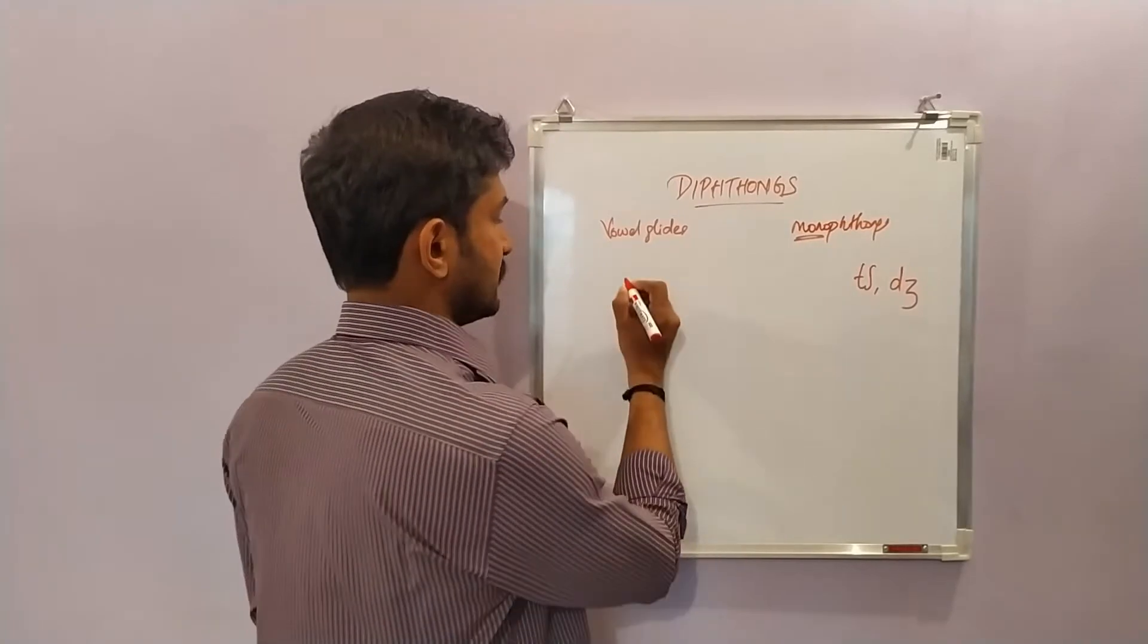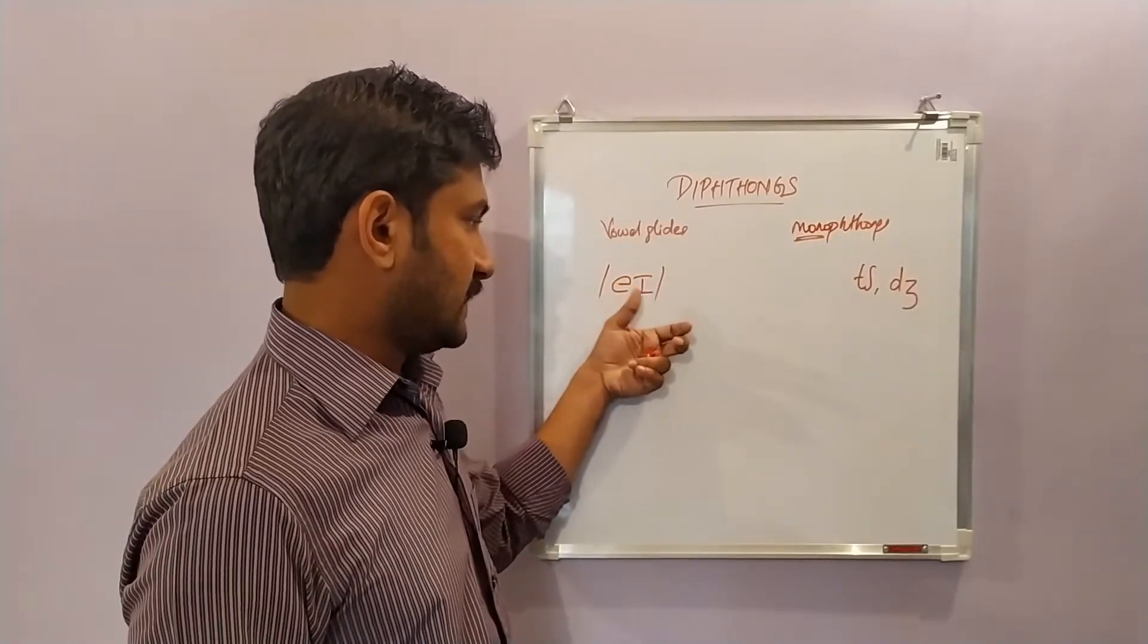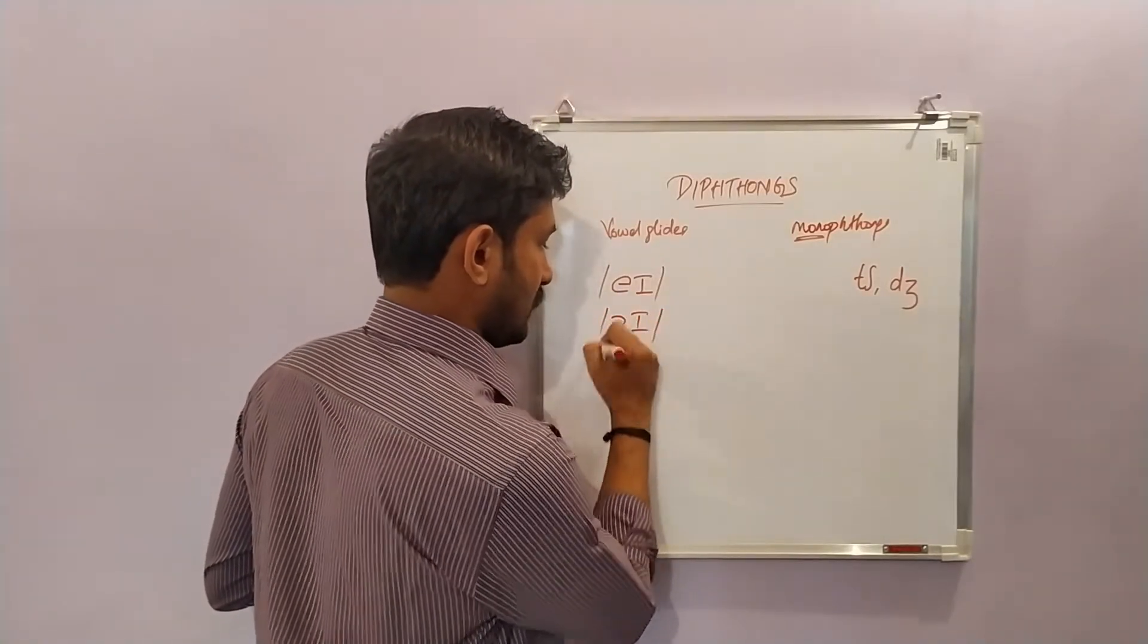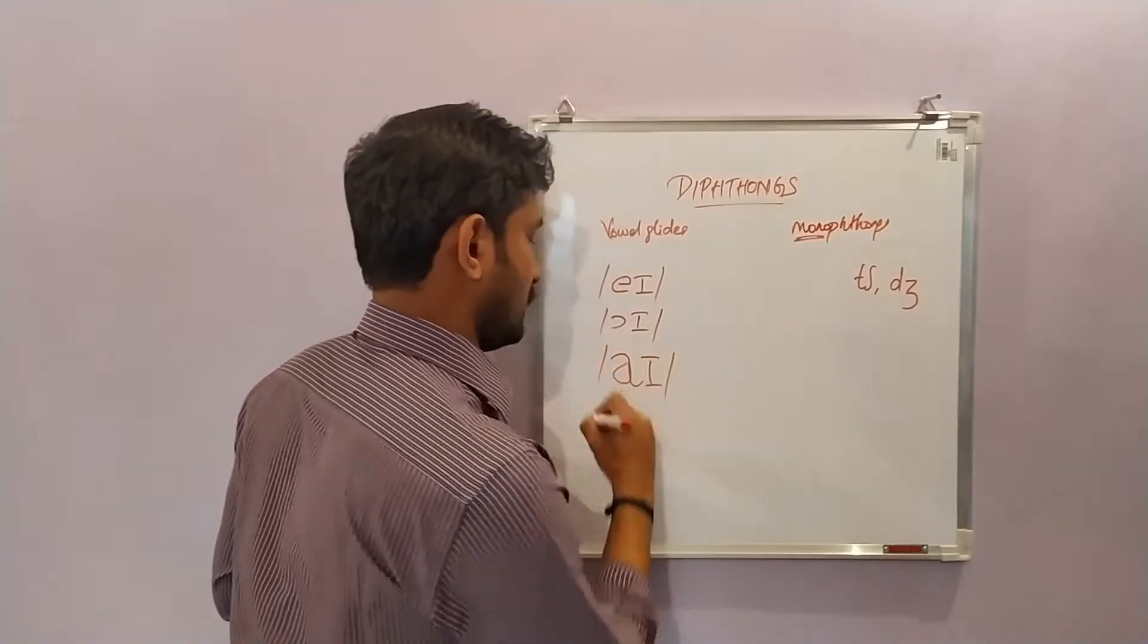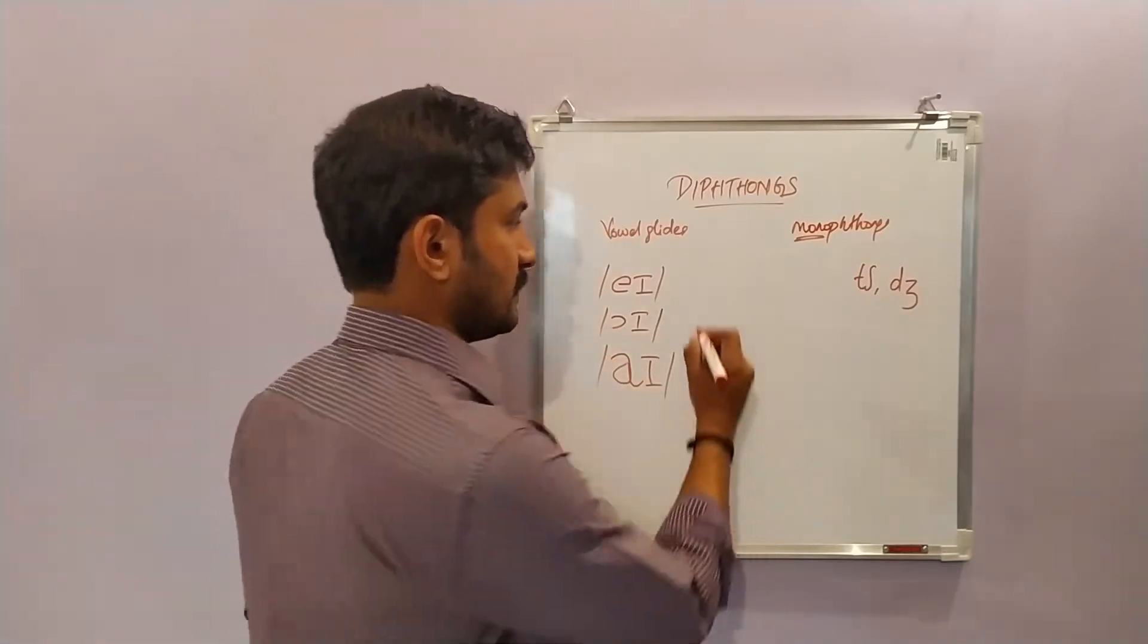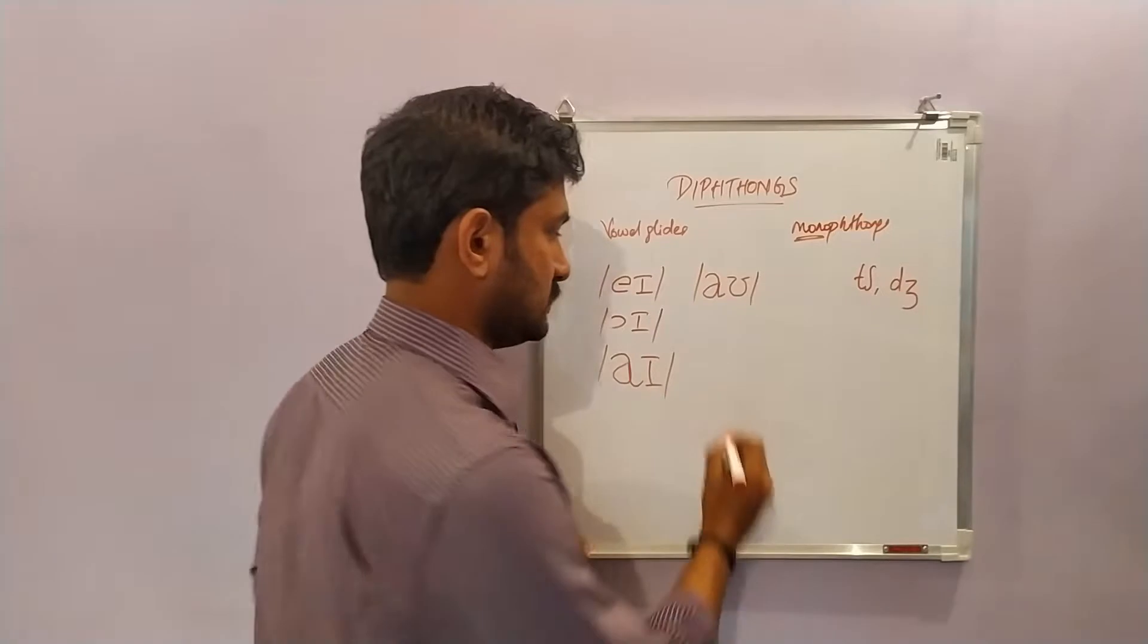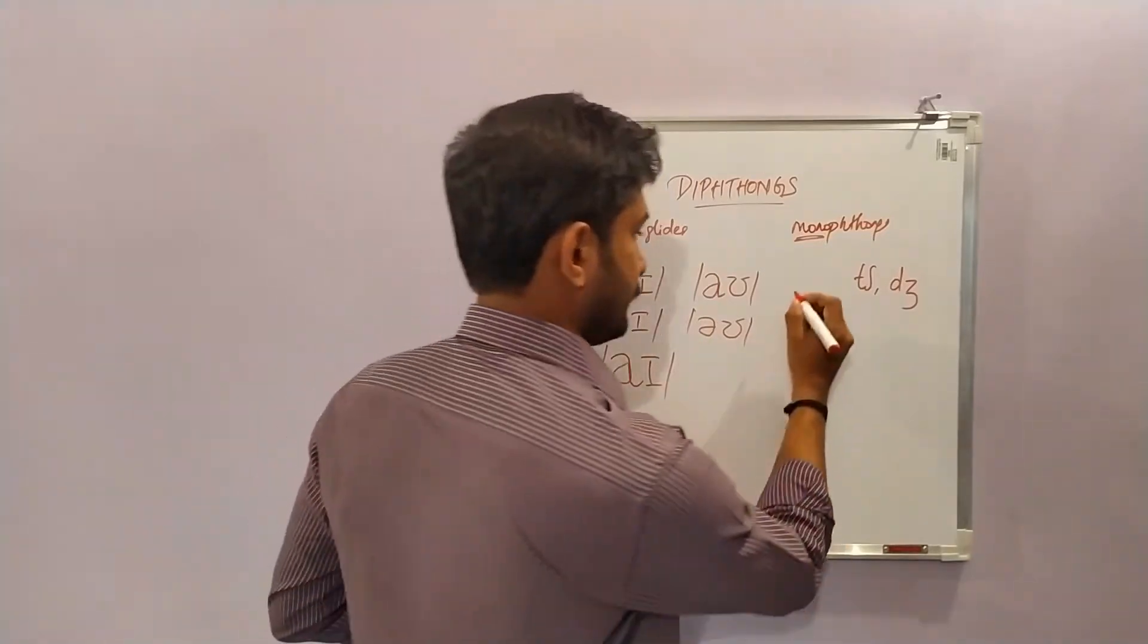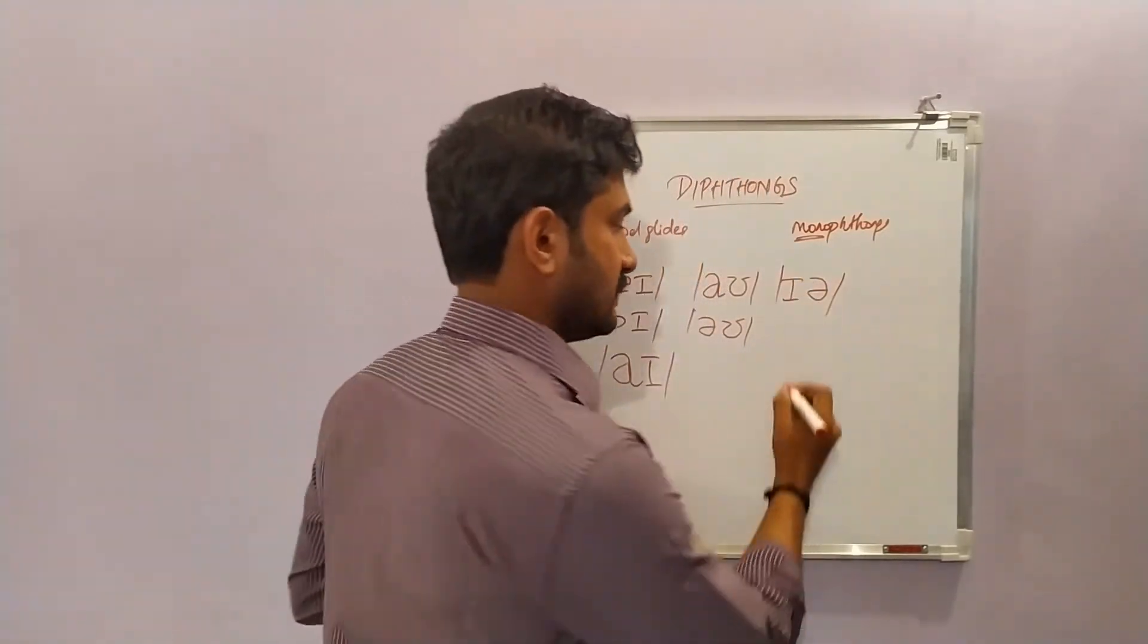So there are eight diphthongs in English. First one, this a sound, this e we pronounce it as a. Oi, oi, hi. E alley, a ora. How, ow. O. I E. U or.